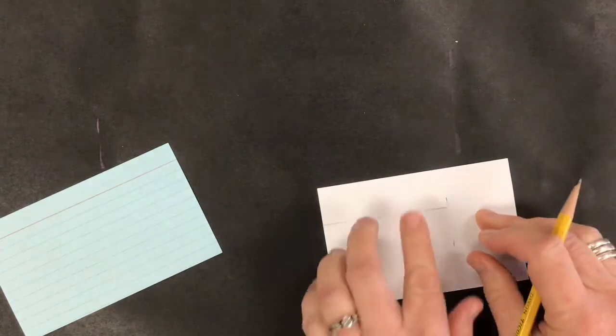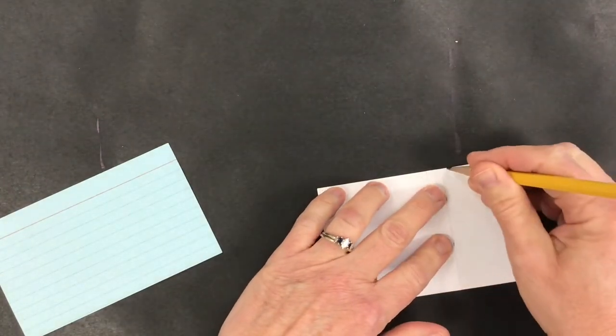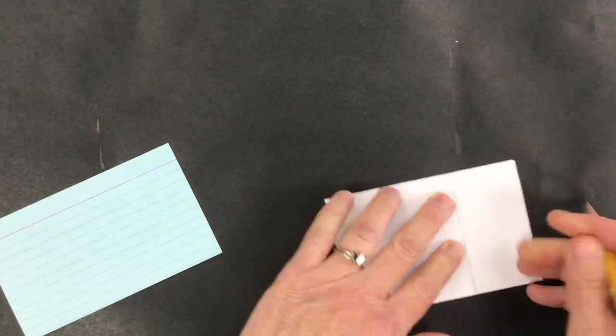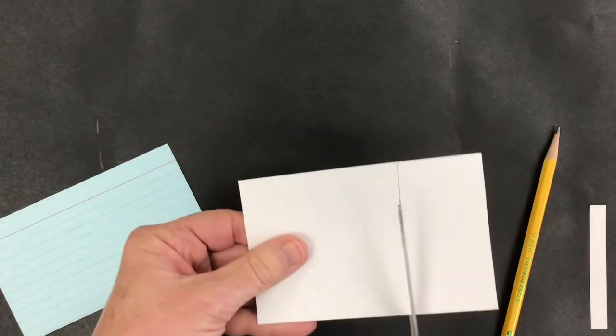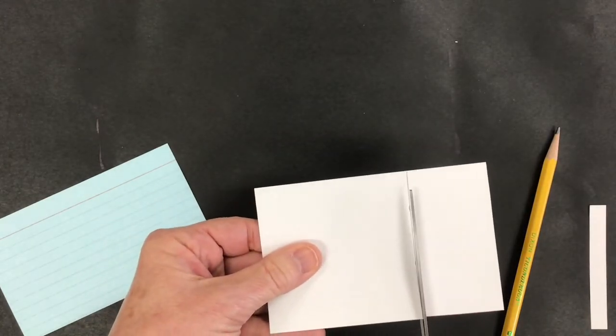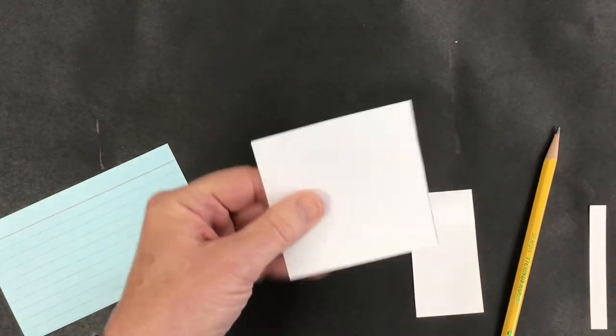I'm making two marks, then I'm going to use it as a straight edge. I'm going to push my pencil against that and make a nice straight line, then cut on that line. If I measured correctly with my little strip, it should be a square.